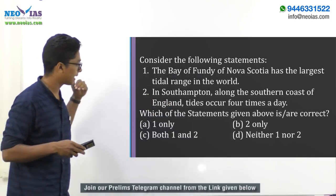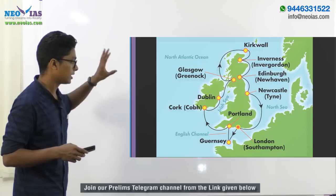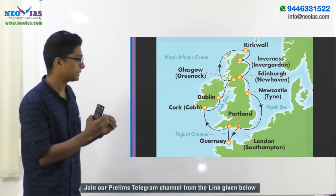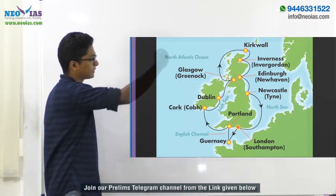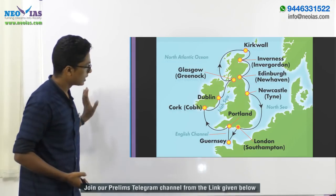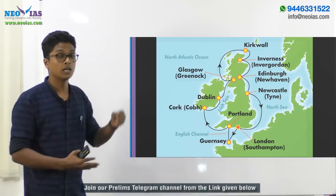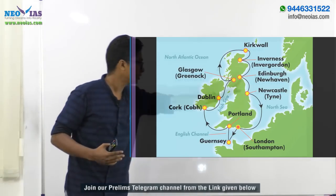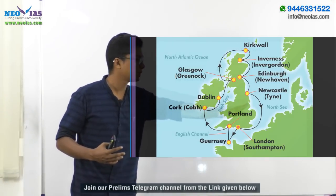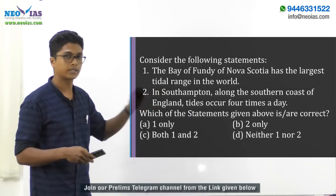However, in Southampton's case, tides occur four times per day. Southampton is connected to the open ocean both through the English Channel and through the North Sea. When either of these regions experiences a high tide, the tidal water rushes into Southampton. So Southampton gets one high tide through the North Sea, another high tide through the English Channel, then one low tide through the English Channel, and another low tide through the North Sea — resulting in four tides per day.